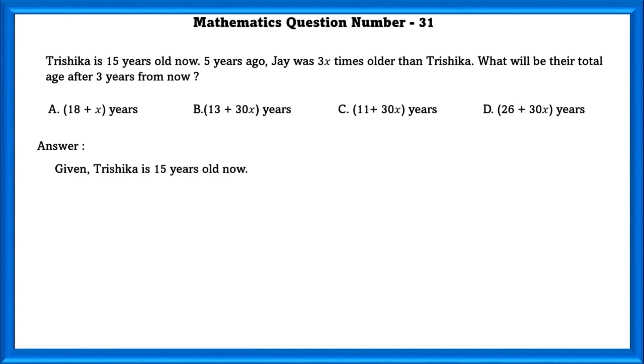Given Trishika's age is 15 years old now. Age of Trishika before 5 years is equal to 10 years. Age of Jay before 5 years is equal to 3x10 that is equal to 30x.